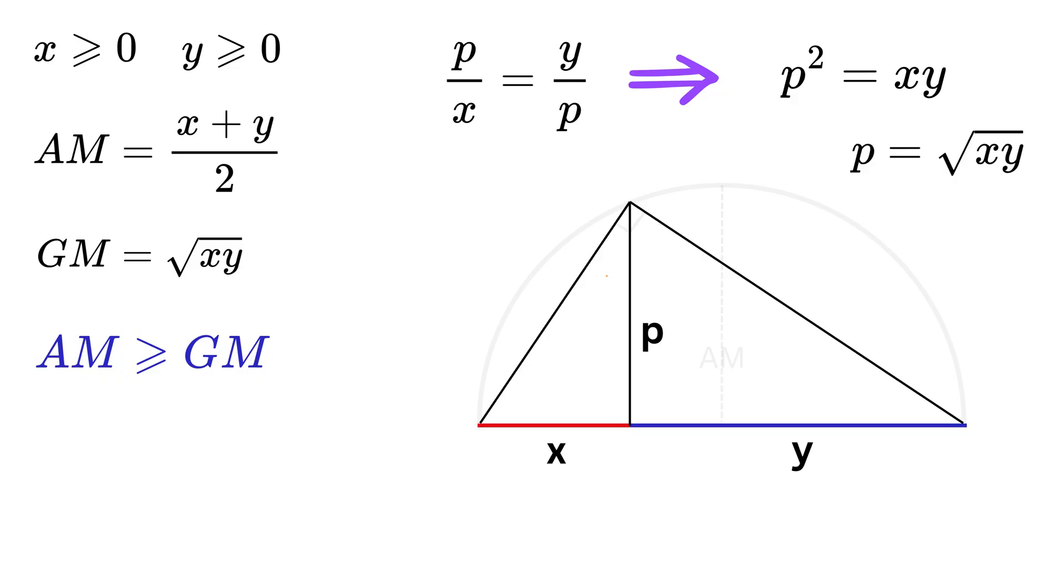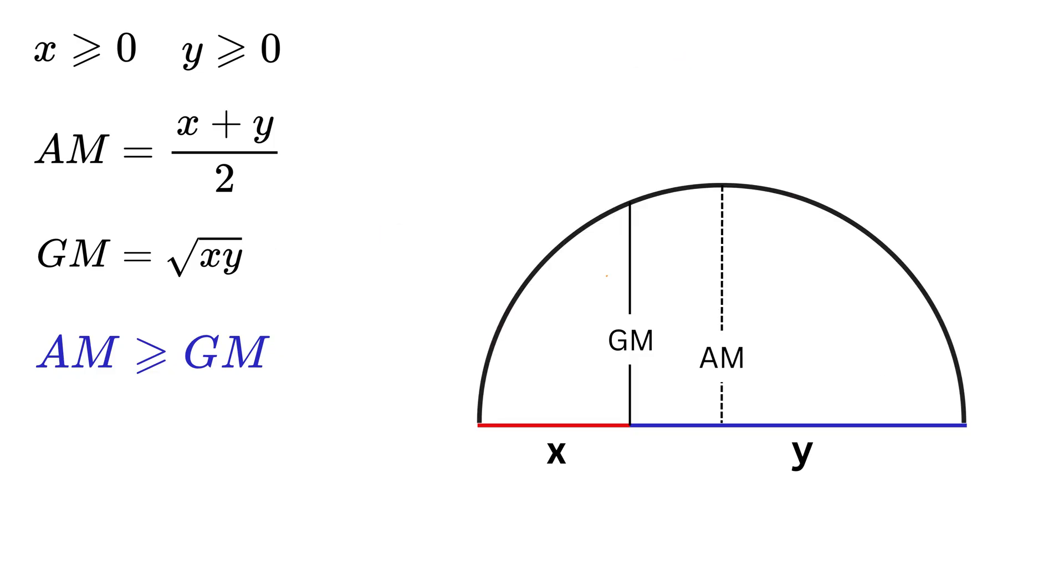Therefore, we can say that p is the GM of x and y. Now, no matter the length of x and y, the chord length p, or the GM, will always be less than, or equal to the radius of this semicircle, or the AM, right? Thus, we get this inequality. Also, you can see that the equal sign will hold true for x equals y.